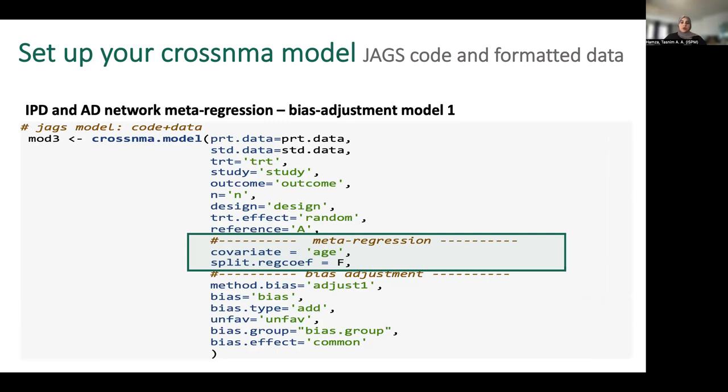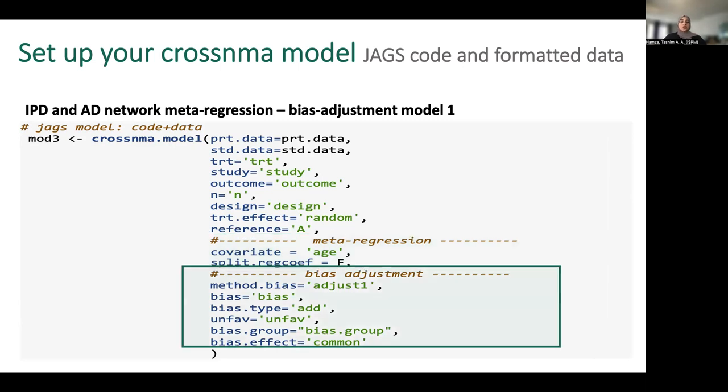To conduct network meta-analysis meta-regression, you could set a covariate. Here we use age to adjust all relative treatment effects. And also, you could adjust the relative treatment effects to study bias using bias adjustment model one. There are many arguments that need to be set as well, all will be described in the help file in the vignette.